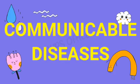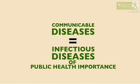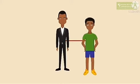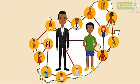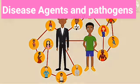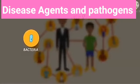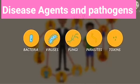What are communicable diseases? Communicable diseases are also called infectious diseases. They are diseases that can be spread from one person to another. These diseases are spread by agents such as bacteria, viruses, fungi, parasites, and toxins.